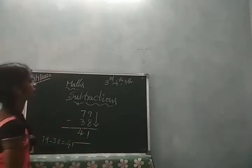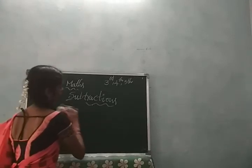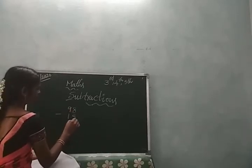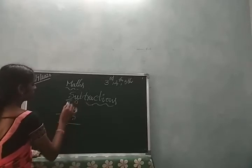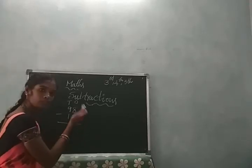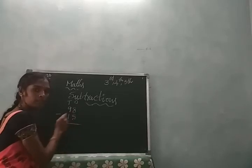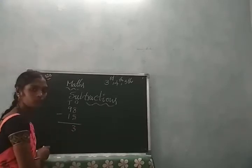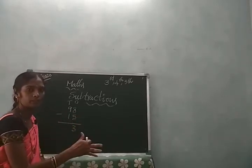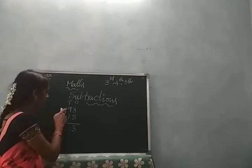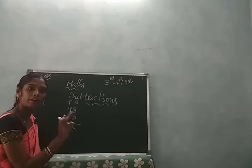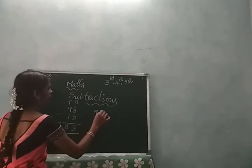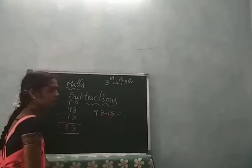Okay students, one more example: 98 minus 15. This is the ones place and tens place. 8 ones subtract 5 ones first: 8 minus 5 is equal to 3. After that, we go to the tens place: 9 minus 1, how much? 9 minus 1 is 8. So 98 minus 15 is equal to 83.